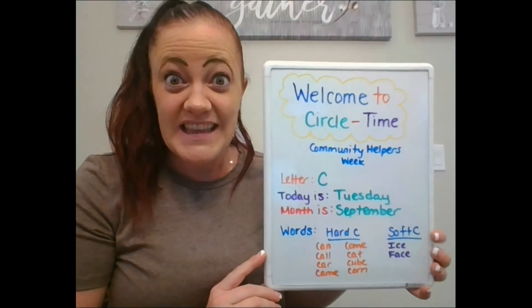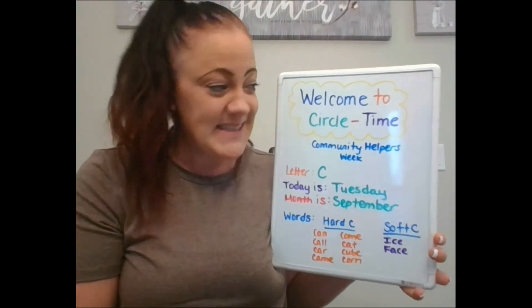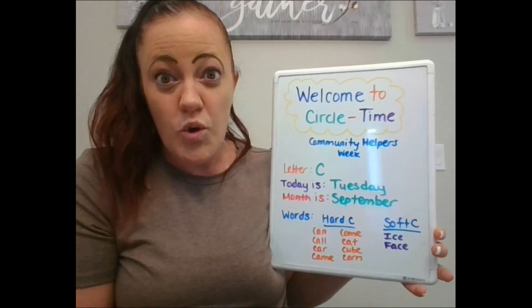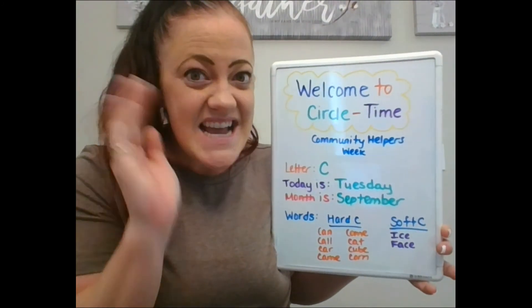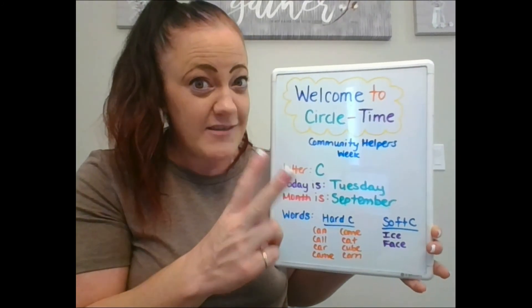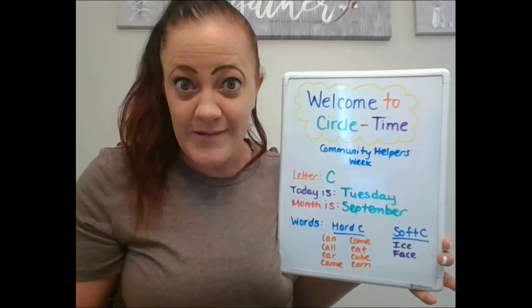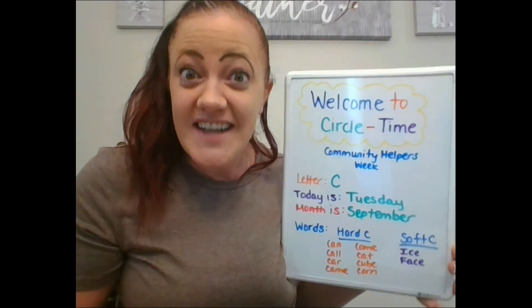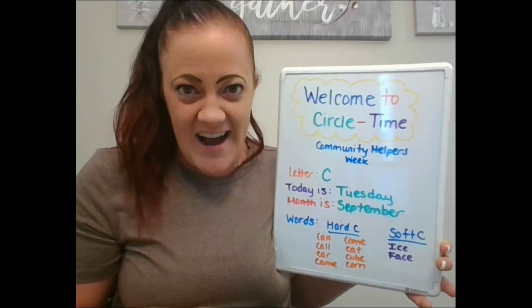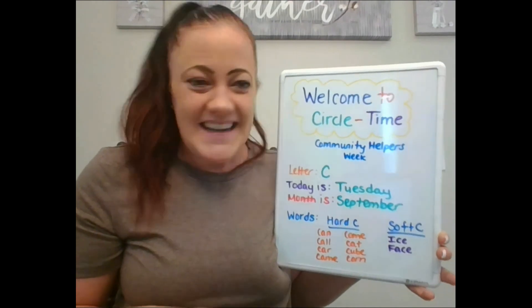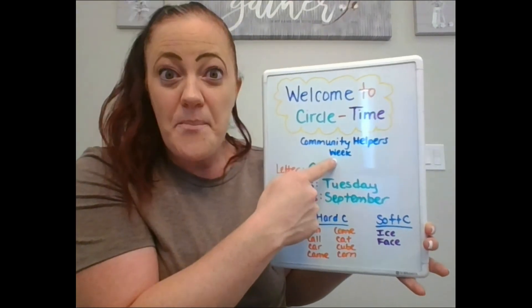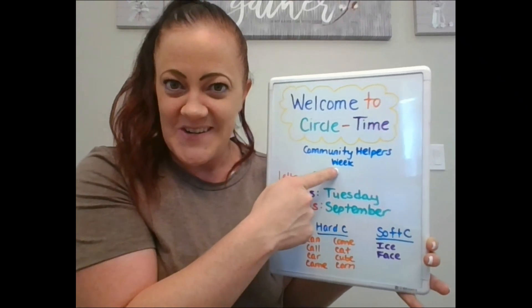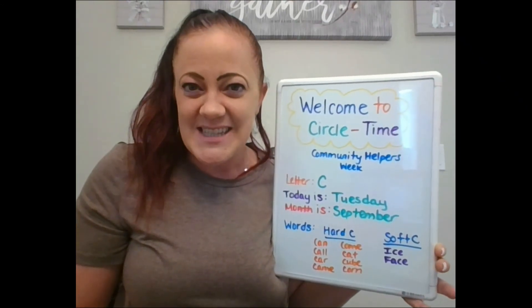Yay! All right, that was a lot of fun. I had a lot of fun playing bingo with you guys. Just a little quick review: our letter of the week was C, and C has two different sounds. What's the hard sound? C, C, C. And what's the soft sound? S, S, S. Good! I hope you guys have a great week talking all about community helpers. Have a good day. We'll see you soon. Bye!